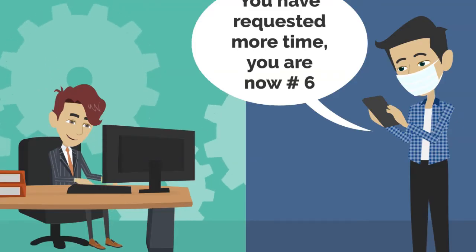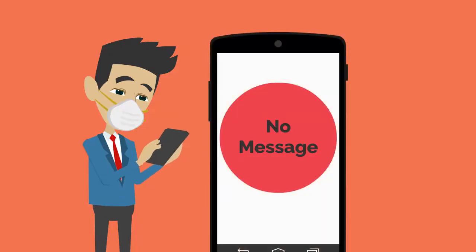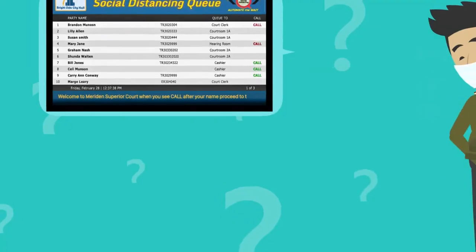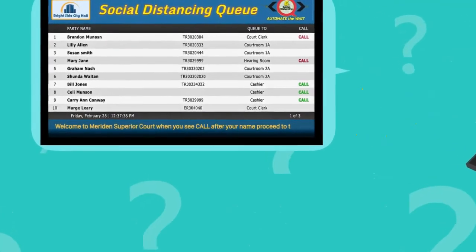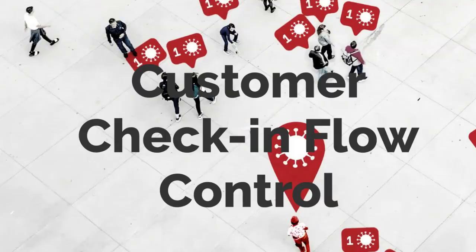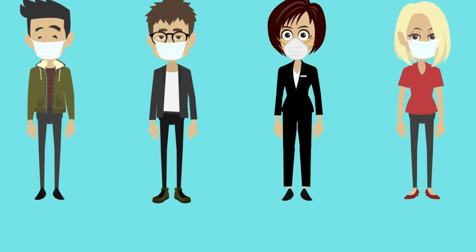Queue managers notify customers using Automate the Wait's interactive messaging. Customers without text messaging can still join a queue and monitor their progress using Automate the Wait's mobile queuing web page. When the customer is notified, the word 'NEXT' will flash next to their name.